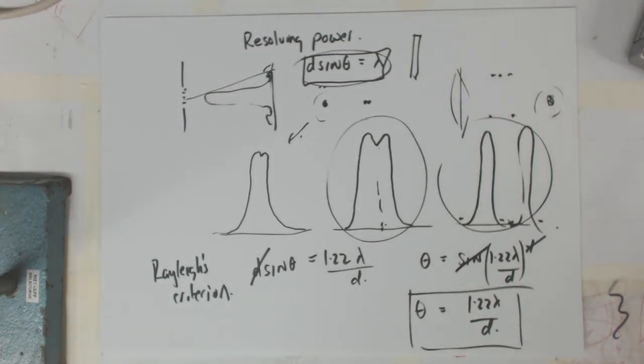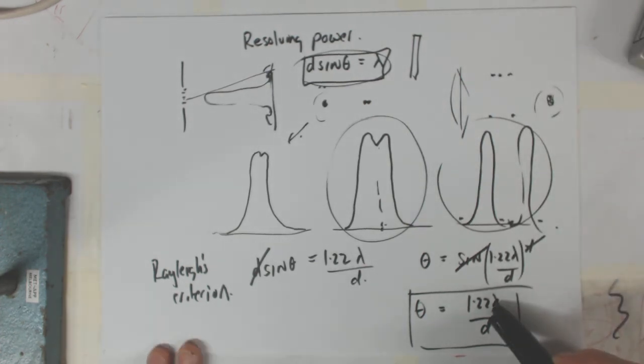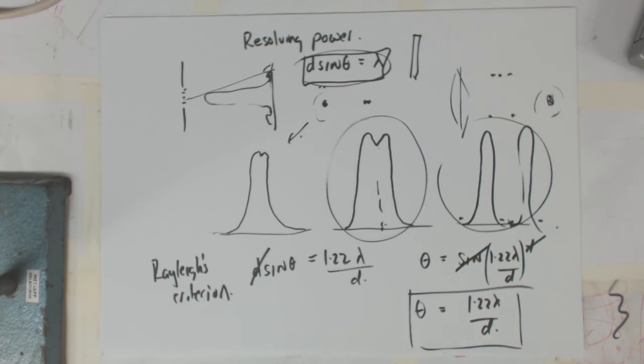Now having a look at that angle, as the d gets bigger, that's the size of the gap, then that angle gets smaller, so you can get a better resolution. Resolution being that we want the smallest angle possible, and the smallest angle possible between these two objects is when the wavelength is small or the d is big. That's always the things we want to look at.